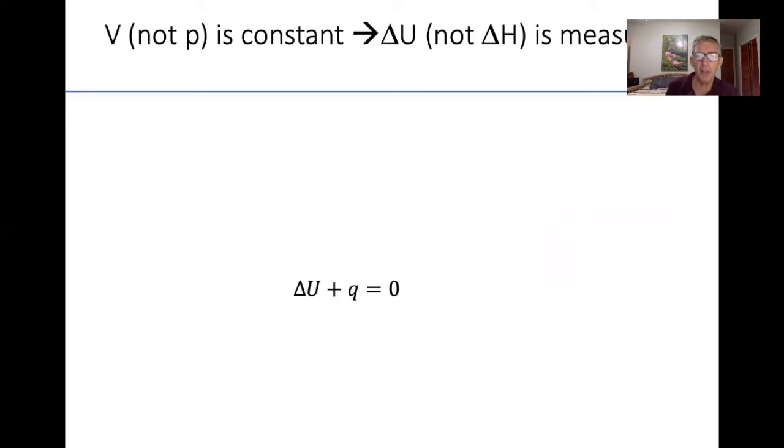Now let's talk about the theory here. First of all, the volume is constant, not the pressure. That's because the reaction takes place in this bomb, which has rigid walls. So what we're measuring is the internal energy of combustion, delta U, and not the enthalpy of the combustion directly. So I've got an equation down here, delta U plus Q is equal to zero. If you think of the calorimeter, including the bomb, as the system, everything all together, that calorimeter has got adiabatic walls. So the heat doesn't leak out of the calorimeter.